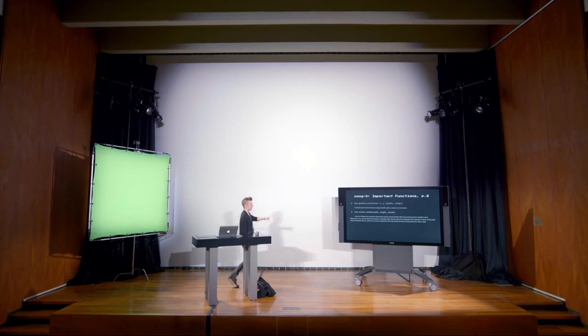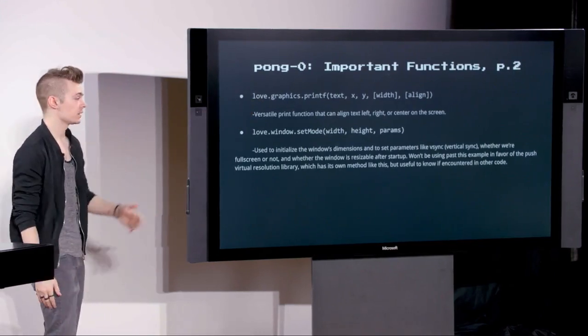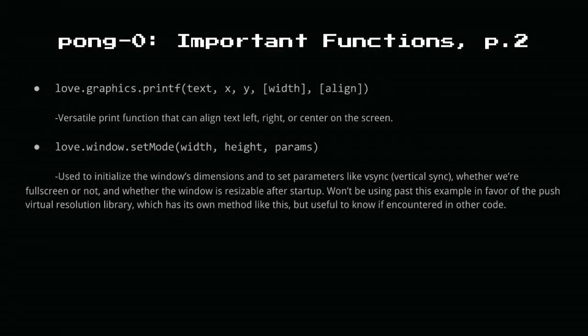love.graphics.printf is the Love2D analog of printf in C, except it draws physically onto the screen. You give it a text string, an x and y coordinate, and optionally a width and an alignment mode. If you say x=0, width=window width, and align='center', it will center-align the text across the full window width. love.window.setMode takes a width and height plus optional parameters like vSync and fullscreen, and sets up our window for rendering.